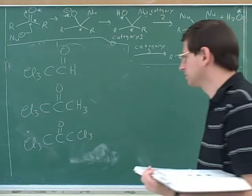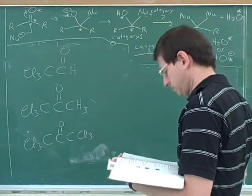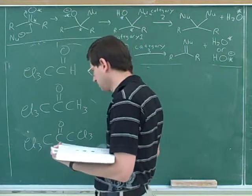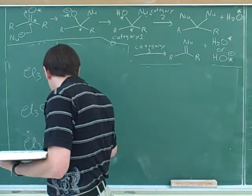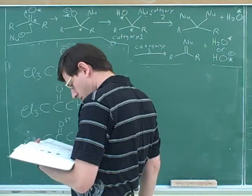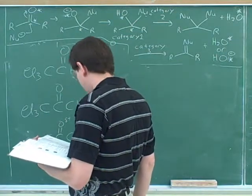So the one with six chlorines would probably steal a lot more electrons, so that one would be the most reactive, right? That's right.